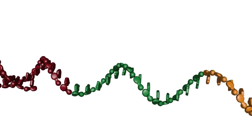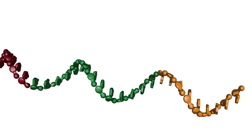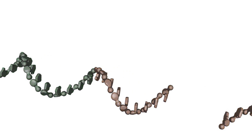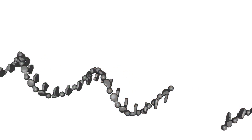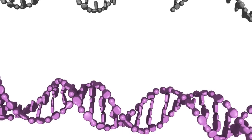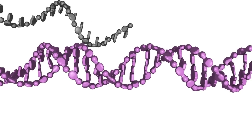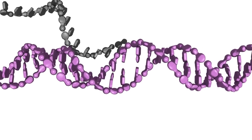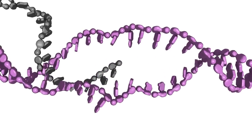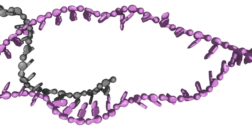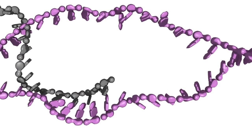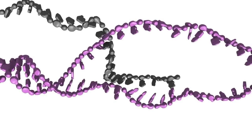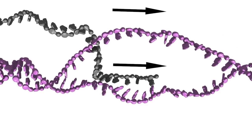In a process mediated by recombination proteins, one of the single-stranded 3'-ended tails from the broken parental duplex shown in grey interacts with a homologous duplex shown in pink, such that the grey single strand invades the pink duplex at a region of homology and forms a region of heteroduplex containing the invading grey single strand and the complementary strand from the pink duplex. The displaced pink strand, which is of the same polarity as the invading grey strand, forms a loop.